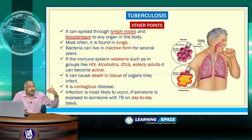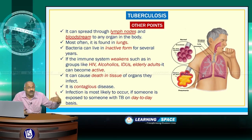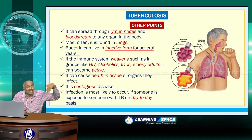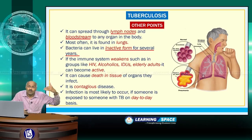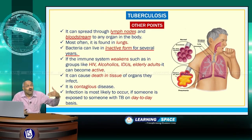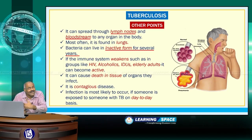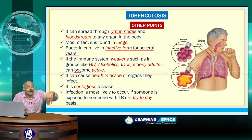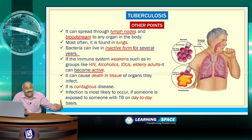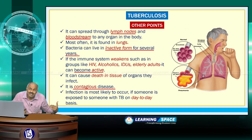Tuberculosis is most often found in the lungs. The bacteria can live in an inactive form for several years. If the immune system weakens — such as in groups like HIV patients, alcoholics, injected drug users, or elderly adults — it can become active and subsequently cause death of tissue in organs. It is a contagious disease.